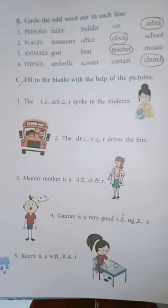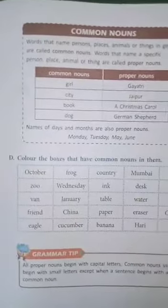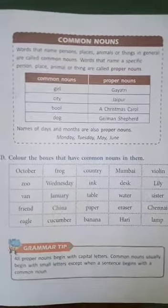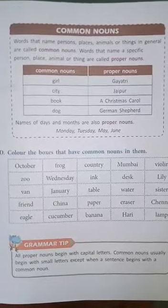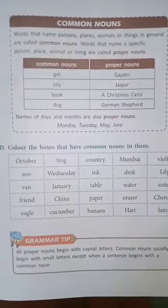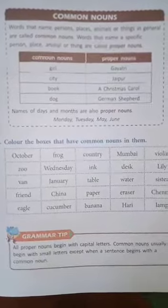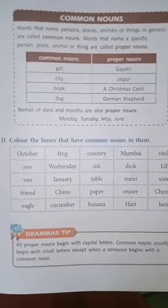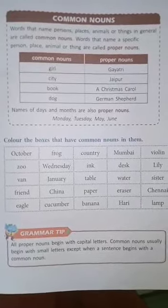I hope exercise B and C must be clear to you all. Let's move on to exercise number D. Colour the boxes that have common nouns in them. Common nouns are the names of a person, places, animals or things we use in general. You have to colour the boxes that name a common noun.